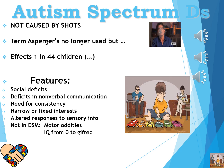Let's consider autism spectrum disorders. Previously we simply called it autism, but the DSM-5 now calls it a spectrum disorder. I want to start by saying it is definitively, according to experimental evidence, not caused by shots. I have a picture of Charlie Sheen because he's a staunch anti-vaxxer. If you want to put your faith in experimental evidence, go with the concept that it's not caused by shots.